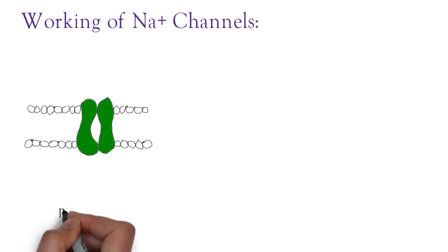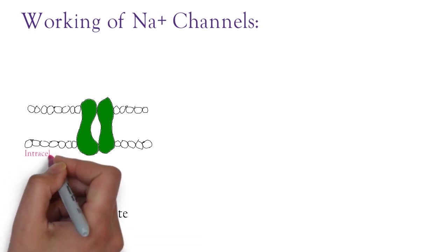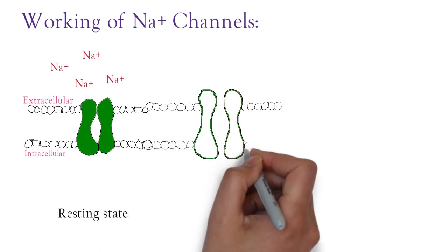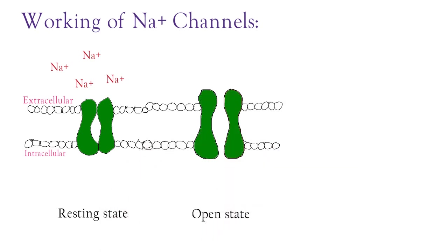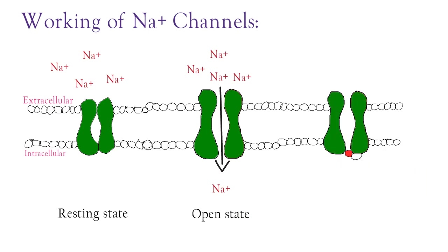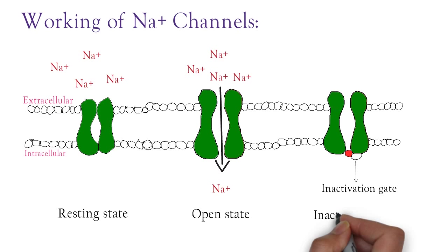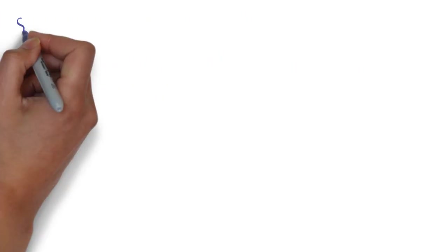The sodium channel exists in three different states. The first is the resting state, in which the channel is closed, so sodium ions — which are predominantly extracellular — cannot enter the intracellular space. The second is the open state, where the central channel pore is open, allowing sodium ions to travel inside the cell and trigger depolarization. The third state occurs within a millisecond after opening: the inactivation gate on the intracellular side closes the channel, keeping it in an inactivated state so sodium ions again cannot enter.